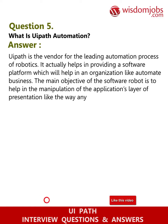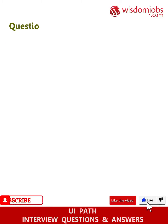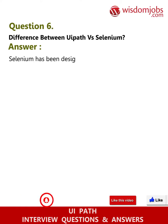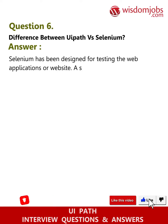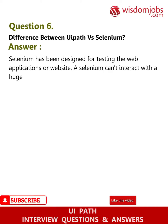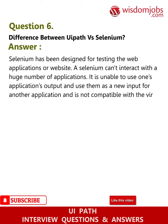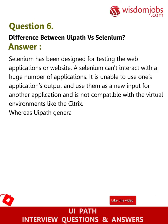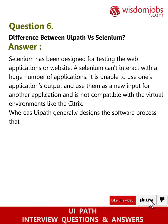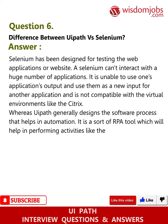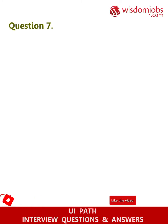Question six: What is the difference between UiPath versus Selenium? Answer: Selenium has been designed for testing web applications or websites. Selenium cannot interact with a huge number of applications, is unable to use one application's output as input for another, and is not compatible with virtual environments like Citrix. UiPath generally designs software processes that help in automation — it is an RPA tool that performs activities like a human.